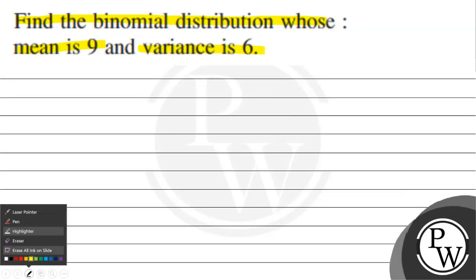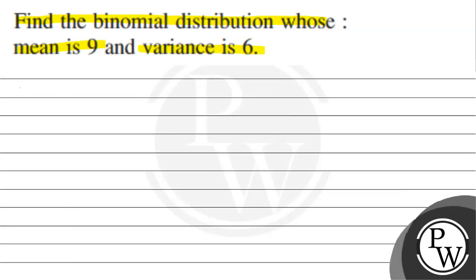Let us write the key concept. The key concept is binomial distribution, which is P when x is equal to r, it is equal to nCr multiplied by p to the power r, q to the power n minus r.